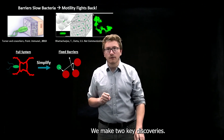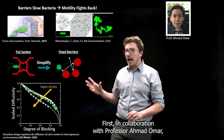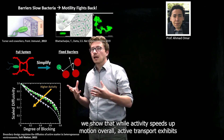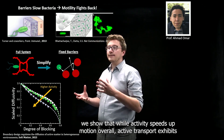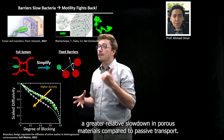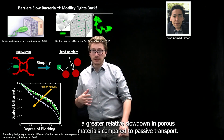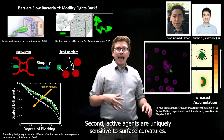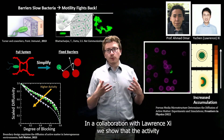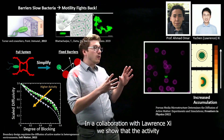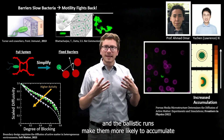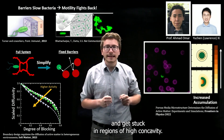We make two key discoveries. First, in collaboration with Professor Ahmad Omar, we show that while activity speeds up motion overall, active transport exhibits a greater relative slowdown in porous materials compared to passive transport. Second, active agents are uniquely sensitive to surface curvatures. In a collaboration with Lauren Shi, we show that activity and the ballistic runs make them more likely to accumulate and get stuck in regions of high concavity.